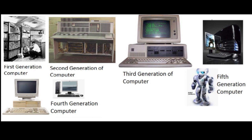Hello students, class 6 English medium computer science. Since the English version of the book you got late, today I will talk to you about computer generations. First you need to know what a computer is and in what cases it is used. A computer is an electronic device that manipulates information or data. It has the ability to store and process data.